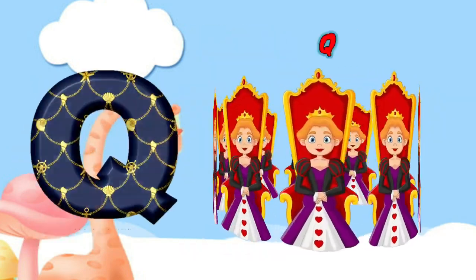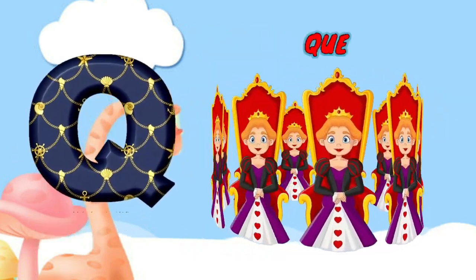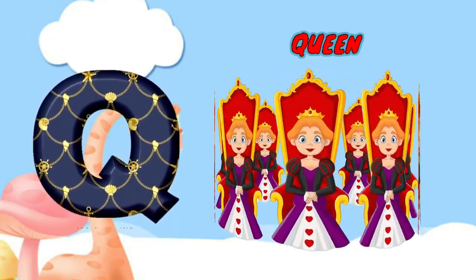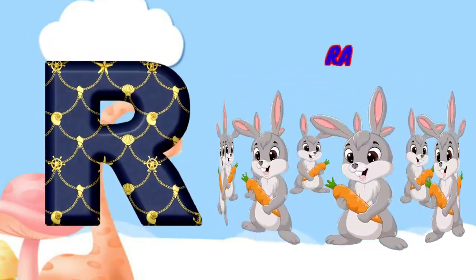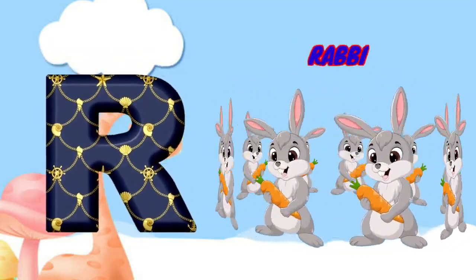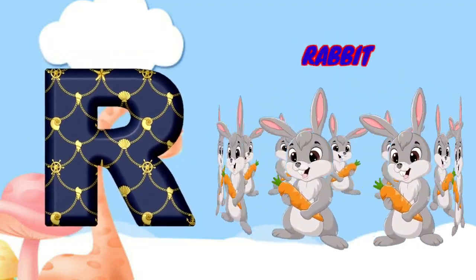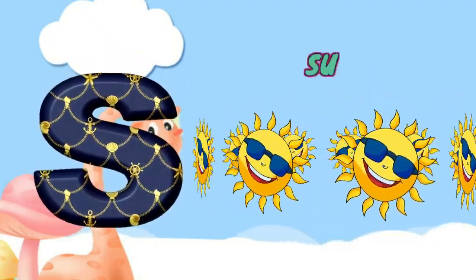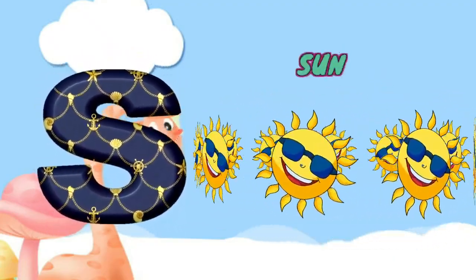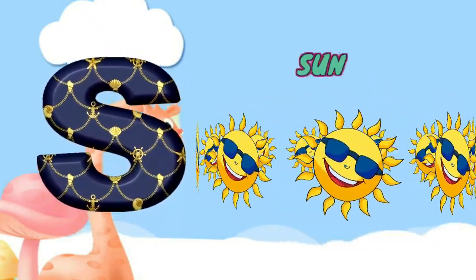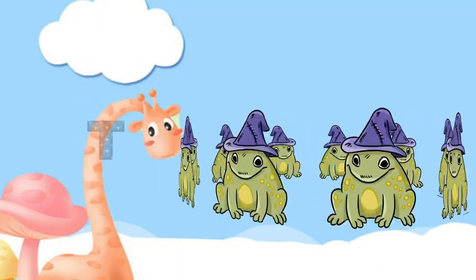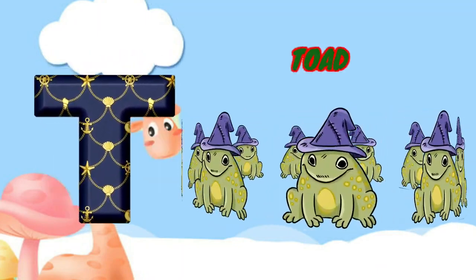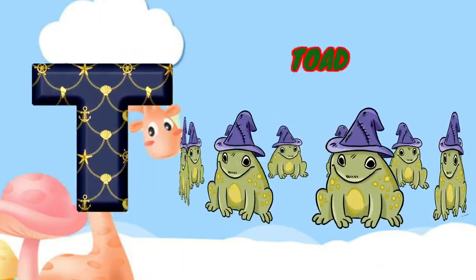Q is for queen, k-k-queen. R is for rabbit, r-r-rabbit. S is for sun, s-s-sun. T is for toad, t-t-toad.